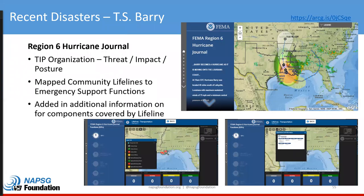Another method for sharing situational awareness was produced by Region 6 during Hurricane Barry. We noticed that the information their group was putting out during Barry through the hurricane journal followed a similar organizational structure. Their incident journals are organized by the acronym TIP, which stands for Threat, Impact, and Posture. The home page web map shows the weather or hazard data; the lifeline sections or ESF depicts the impacts; and then the regional posture of teams and facilities is at the end.